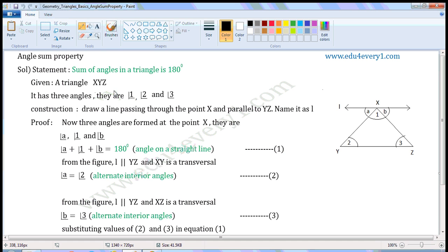Given a triangle XYZ. It has three angles. They are Angle 1, Angle 2, and Angle 3.